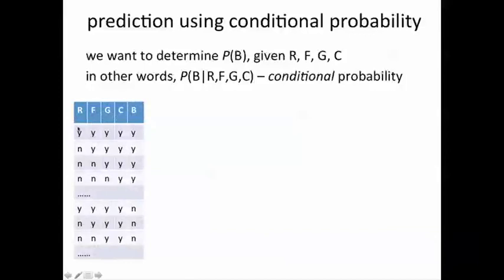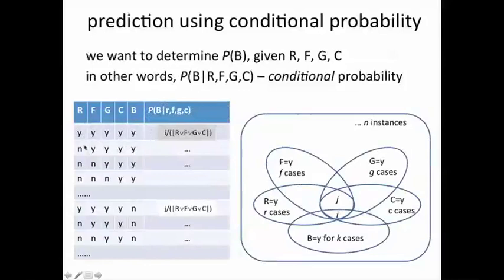For each combination of keywords being present or absent, for example, all yeses, three yeses and a no, two noes and two yeses, we have the probability that there is a buy and we would also like to figure out the probability for the same combination that there is not a buy. Notice that this is a summary table with one entry for each combination, whereas our historical data probably has millions of entries for each combination. So this probability is computed by adding up appropriately the data from our historical transactions.